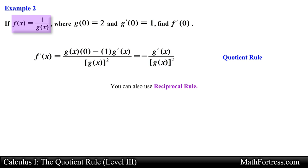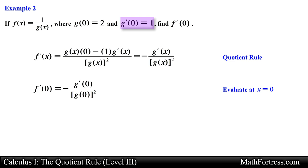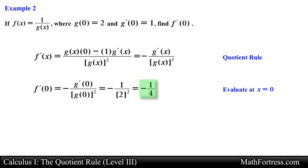Notice that we could also have identified this function as a reciprocal function and made use of the reciprocal rule. Regardless of the rule applied, you should end up with the following expression for the derivative: negative g prime of x over g of x squared. Next we substitute the provided values: g prime of 0 equals 1 and g of 0 equals 2. Simplifying the expression we obtain the final value equal to negative 1 fourth.